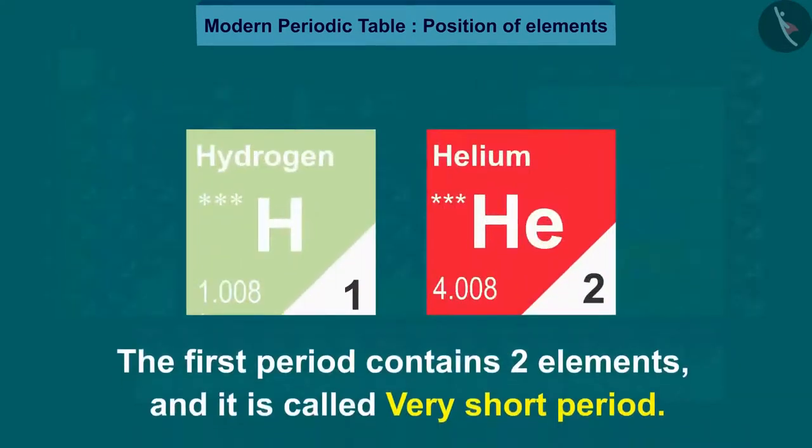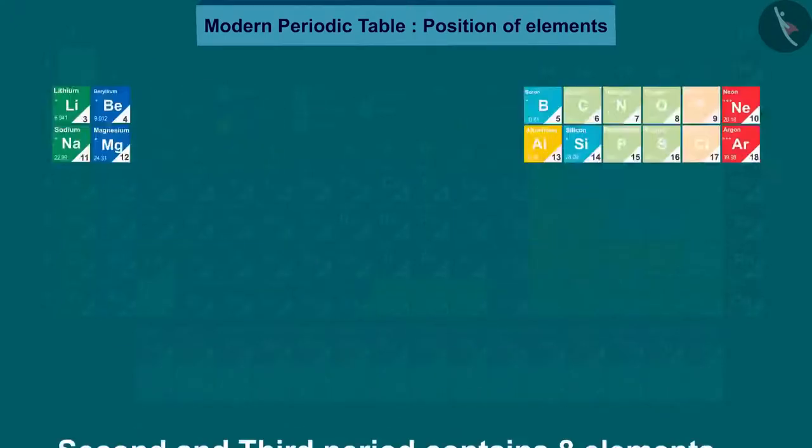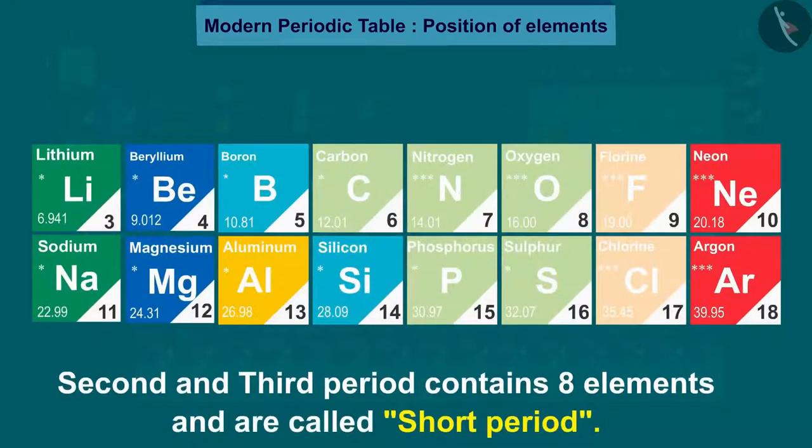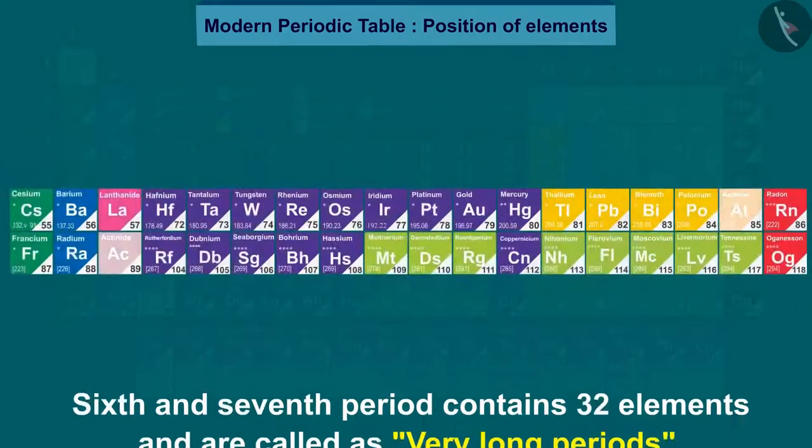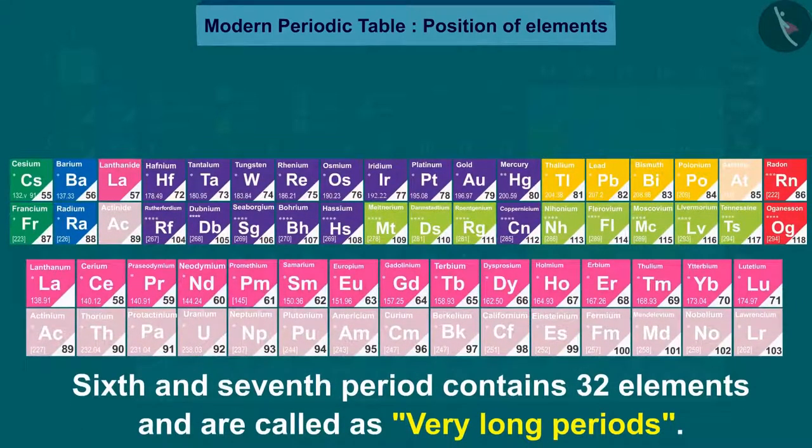The first period contains two elements and is called very short period. The second and third period contain eight elements and are called short period. The fourth and fifth period contains 18 elements and are called long period. The sixth and seventh period contains 32 elements and are called very long periods.